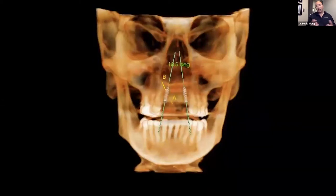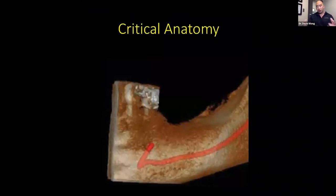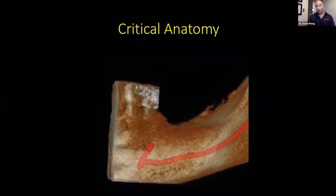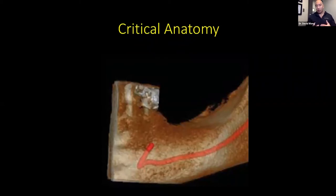For implant treatment planning, patients love seeing CBCT images — it's hard to show them on a periapical or panorex, especially in the anterior region where panoramics have the most distortion. It's a great tool to show patients where the implant is going to go. We also need to identify critical anatomy such as the mandibular canal so we don't hit any nerves. This helps explain our safety zone to patients and puts their minds at ease that we've foreseen potential complications.